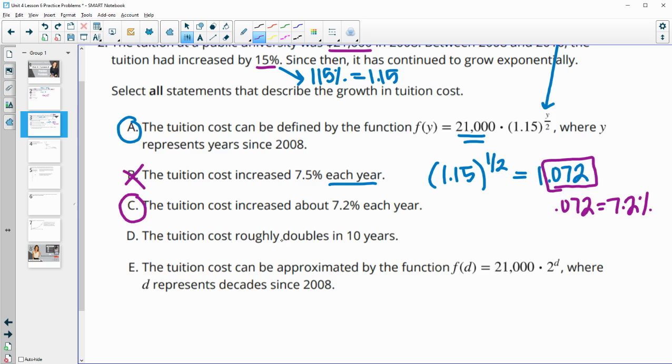Then this says the tuition roughly doubles in 10 years. So we can take this 1.15 and check this out. So remember, this is every two years. So how many times will it grow in 10 years? So that's going to be five times. You can also think about doing it as 10 divided by two. So 1.15 to the fifth is approximately 1.967. And so yes, that growth factor is about two times. So roughly, not exactly, but roughly doubles.